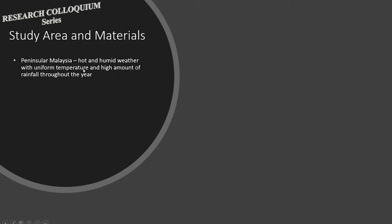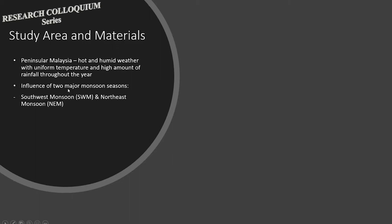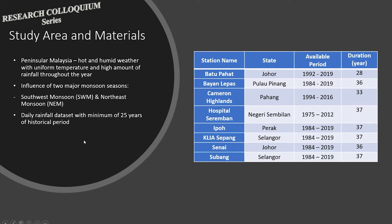The weather is influenced by two major monsoon seasons: firstly, the southwest monsoon which occurs from May to September, then the northeast monsoon which happens from October to March. In this study, daily rainfall data for eight stations with a minimum historical period of 25 years were used, as shown in the table.